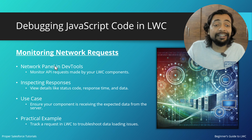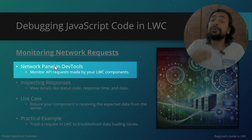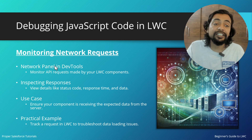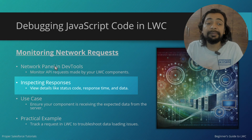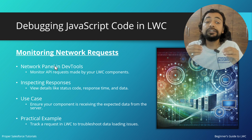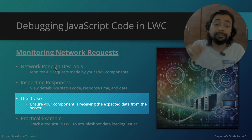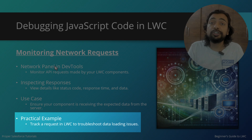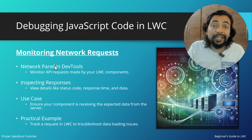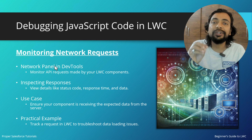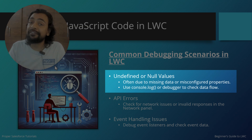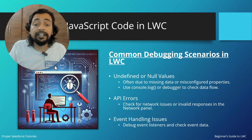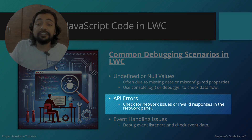For monitoring network requests, the network panel in dev tools is used to monitor API requests made by LWC. You can inspect response status codes, response times, and the actual data returned. It ensures your component is receiving the expected data from the server — especially useful for troubleshooting data loading issues with third-party APIs. For common scenarios like undefined or null values, use console logs or the debugger; for API errors, use the network panel.